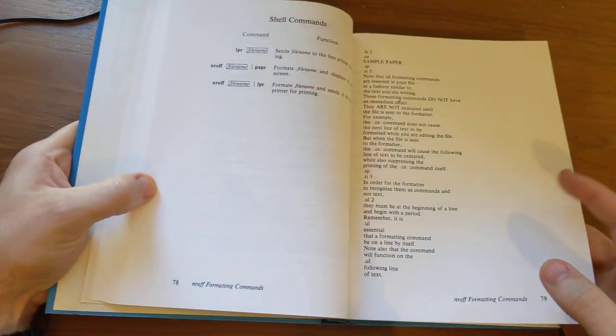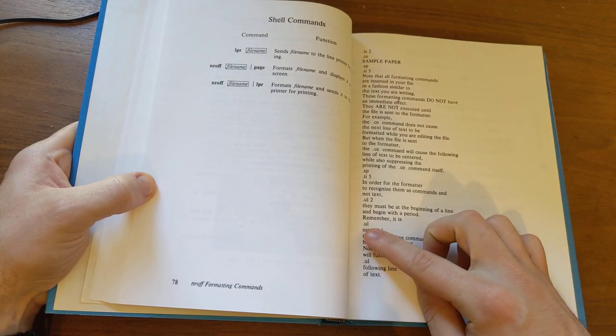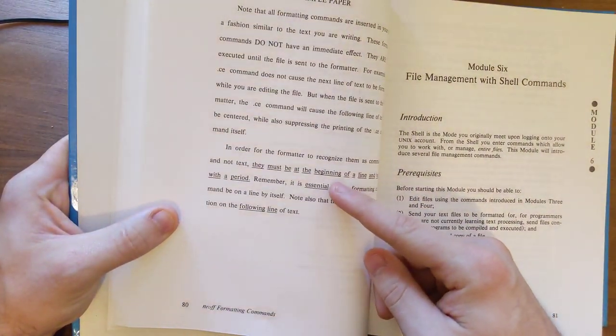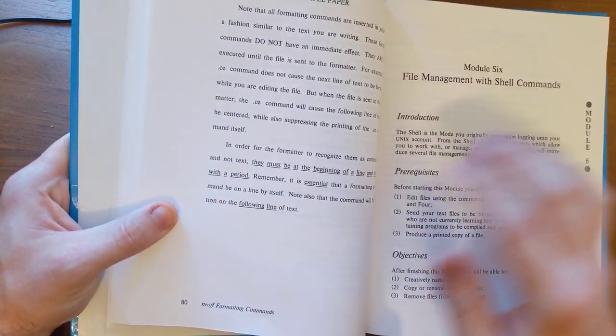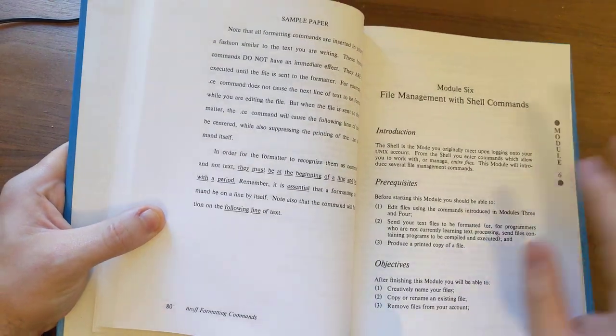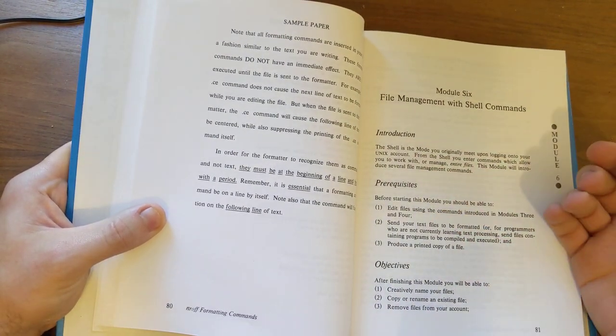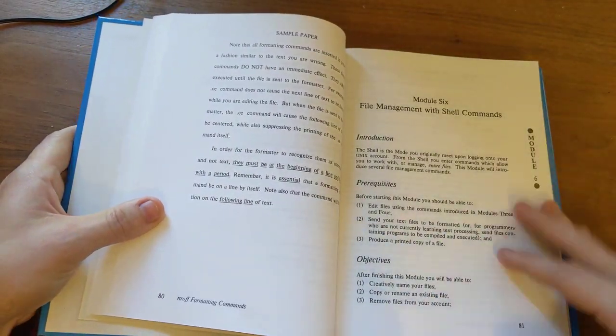So, an input file like this formats into something like this where you have centering, you have underlines and stuff like that. Actually, I think in modern, I think in modern Rof, UL actually, I mean, obviously it originally was underlined. I think nowadays it will actually italicize, italicize text. Or, or maybe, that might be a difference between in Rof and Trof or whatever, but they'll get into that later.